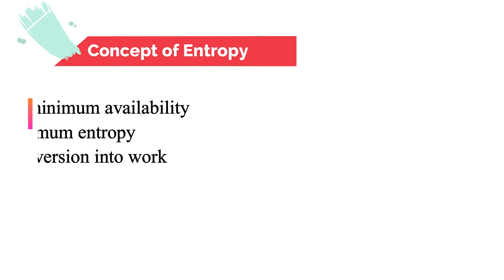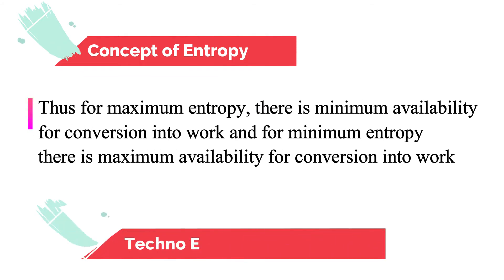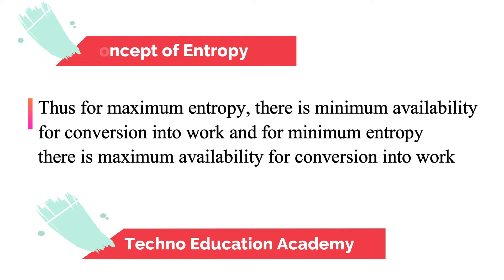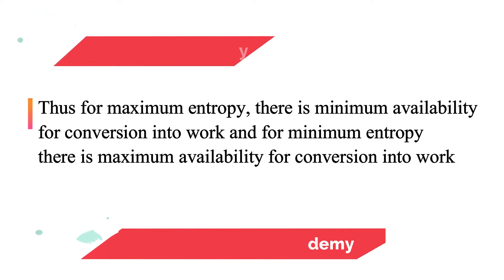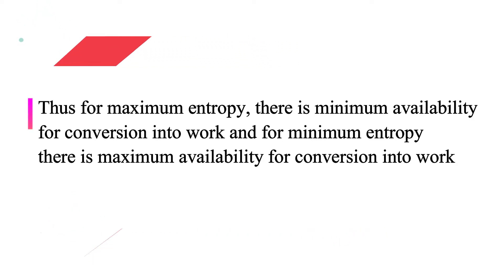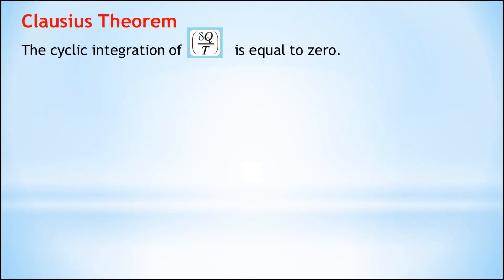Thus, for maximum entropy there is minimum availability for conversion into work, and for minimum entropy there is maximum availability for conversion into work.